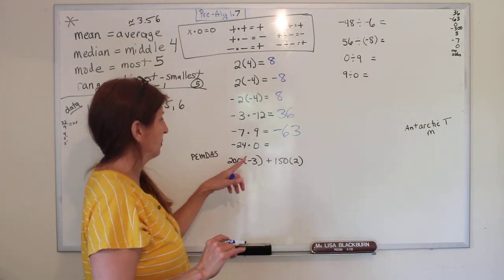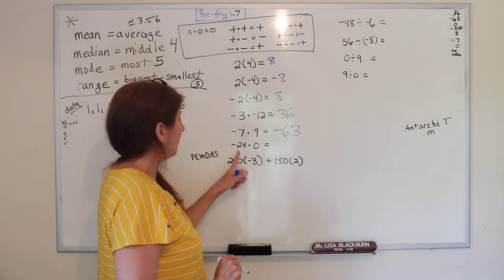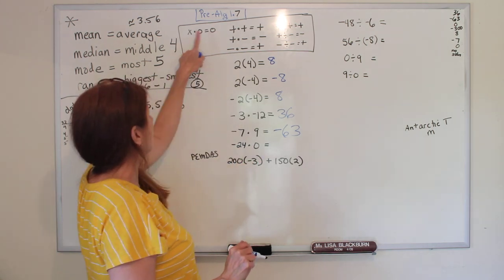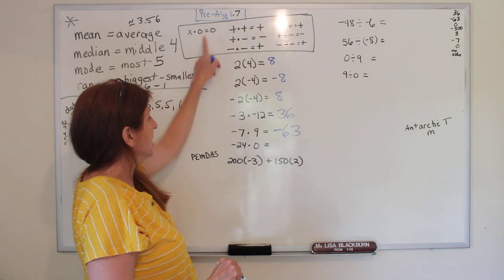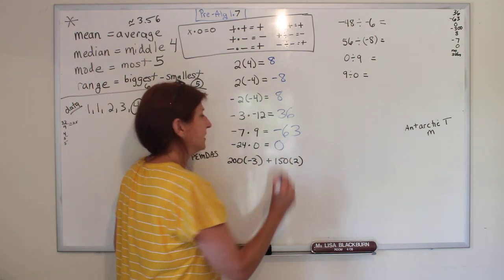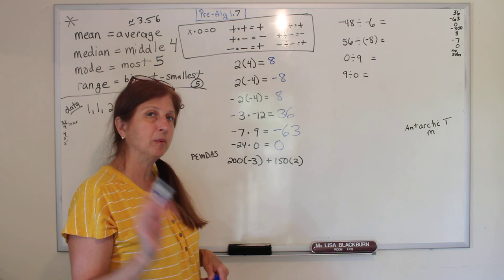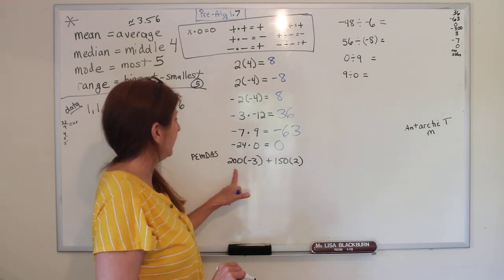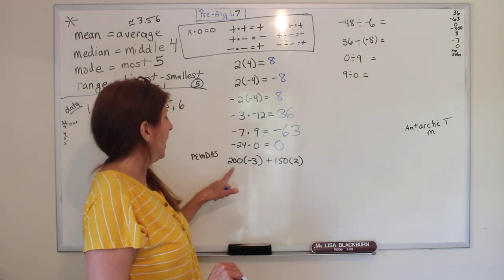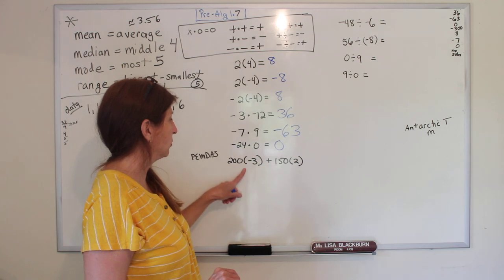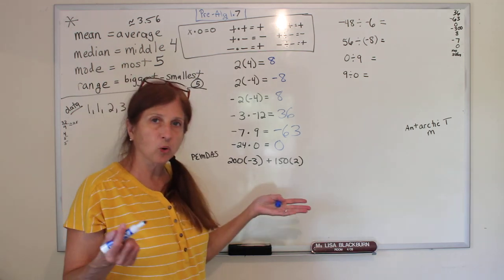All right, anything times zero equals zero, so negative 24 times zero is zero. You probably have learned that before. And here is a problem we can do, and notice it's got plus and multiply, so we have to do order of operations - please excuse my dear aunt Sally.